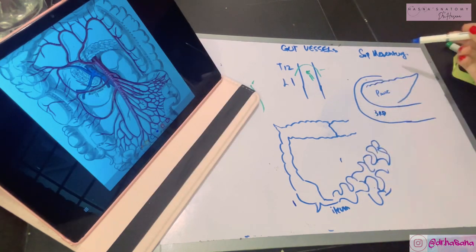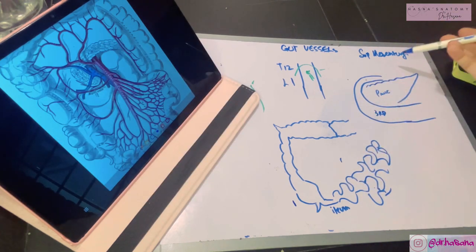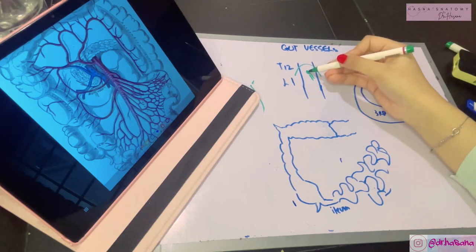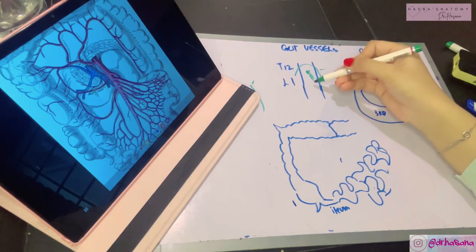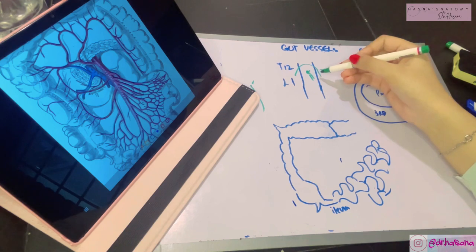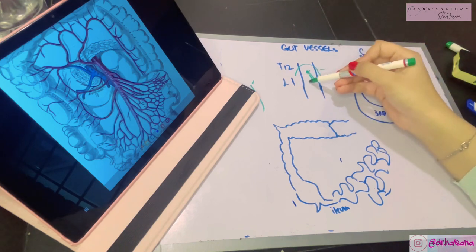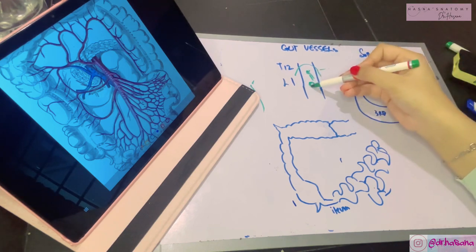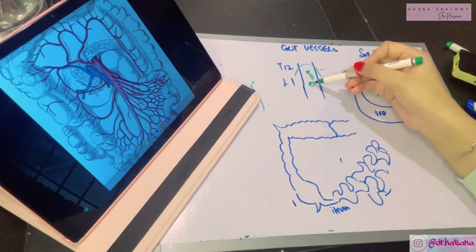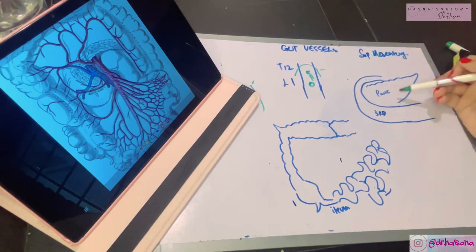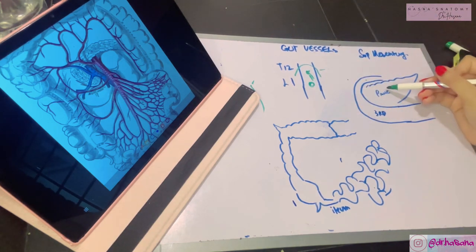The superior mesenteric artery arises just one centimeter below the origin of the celiac trunk at the L1 vertebra. It arises from the aorta, and at its origin it lies right behind the body of the pancreas.